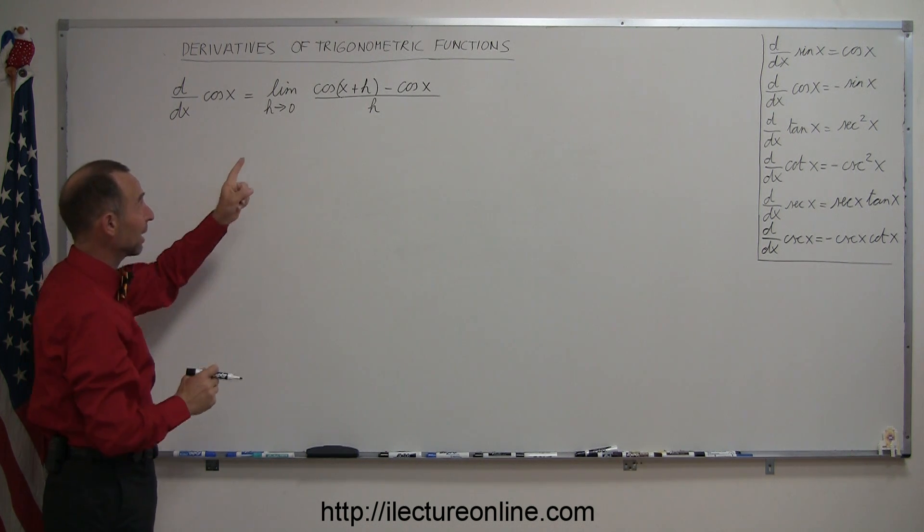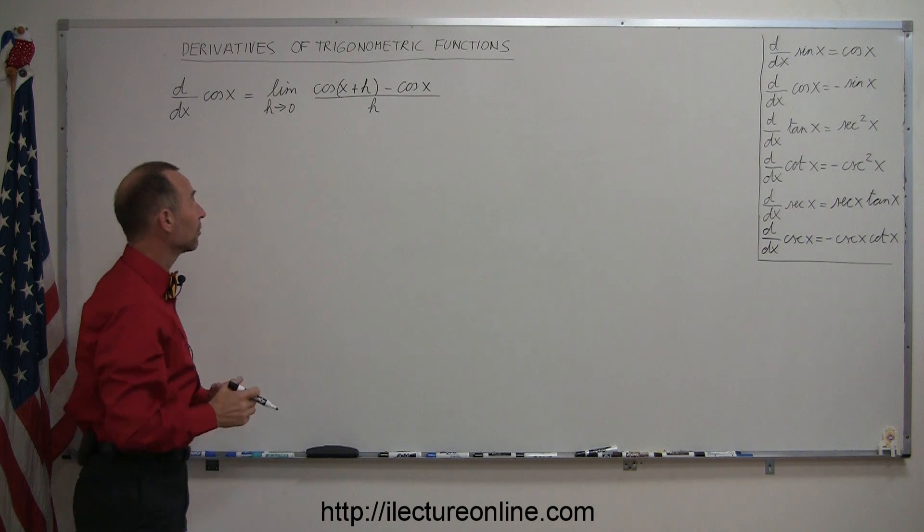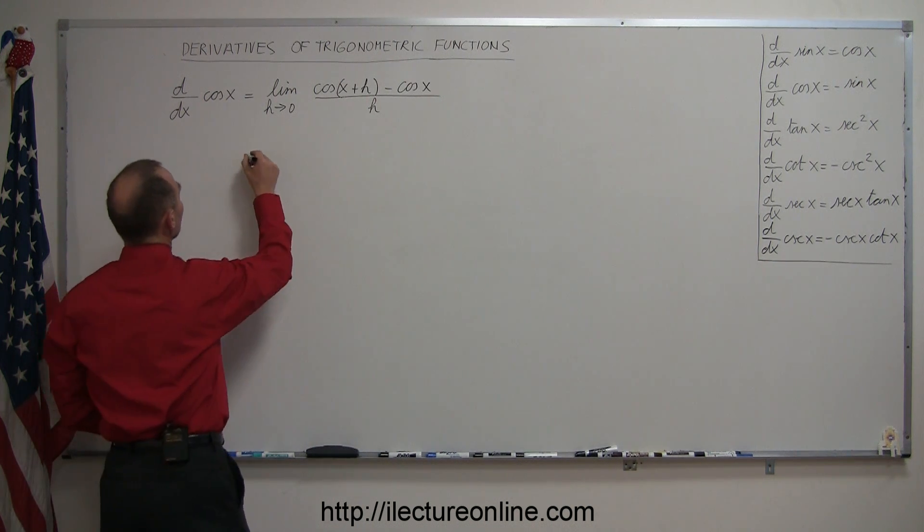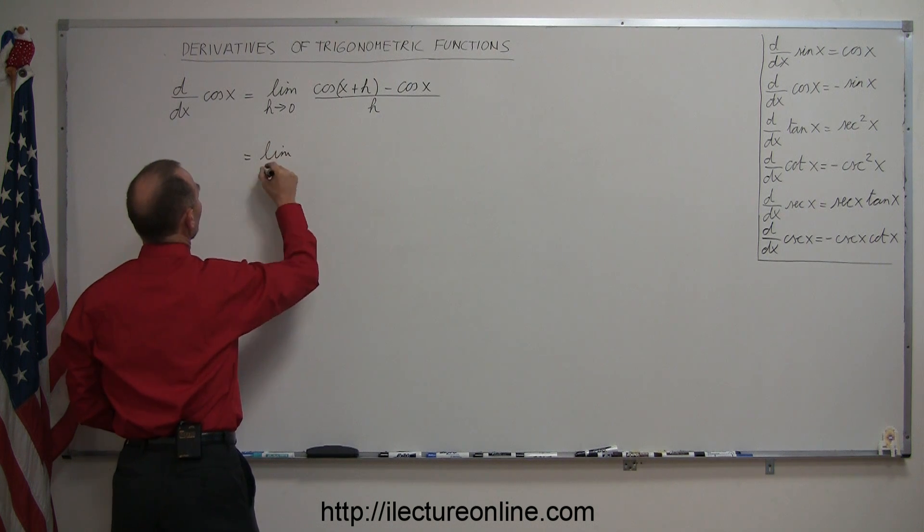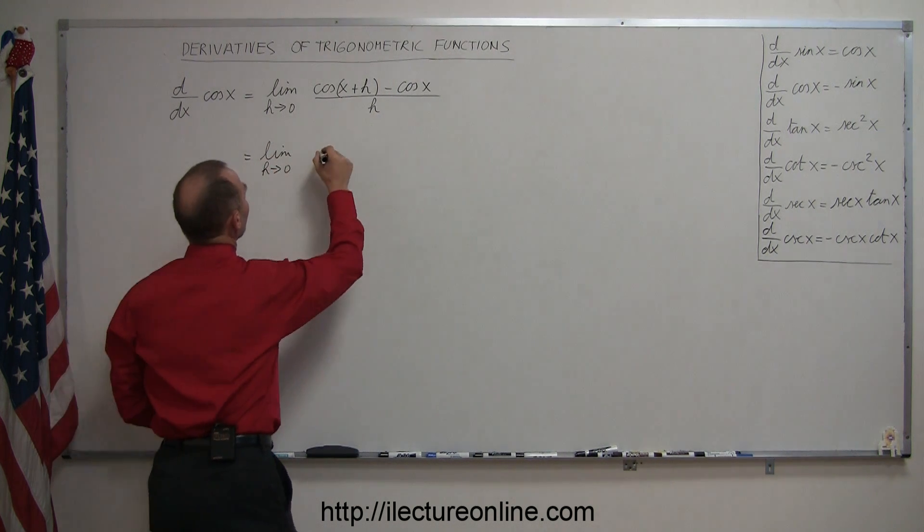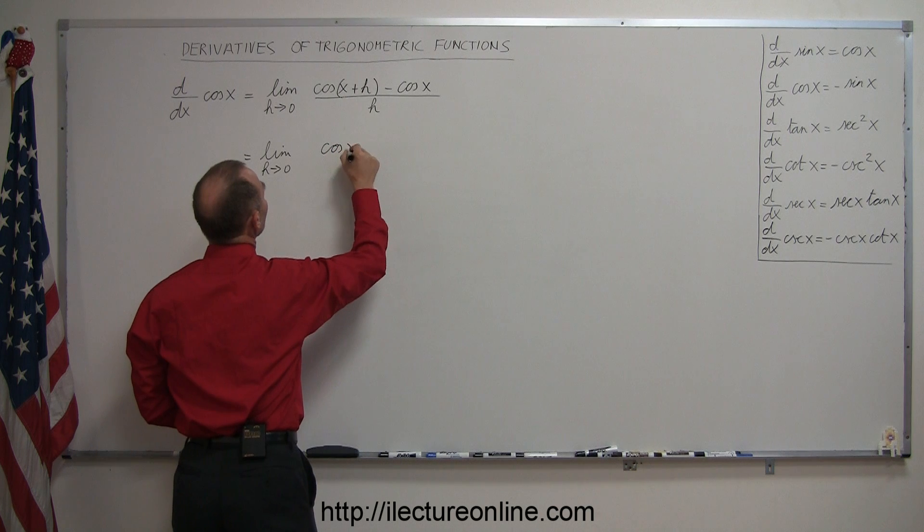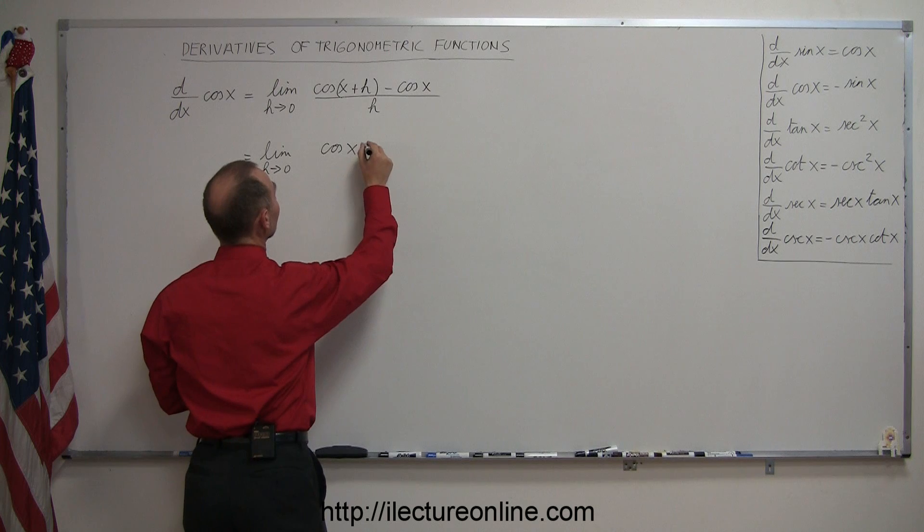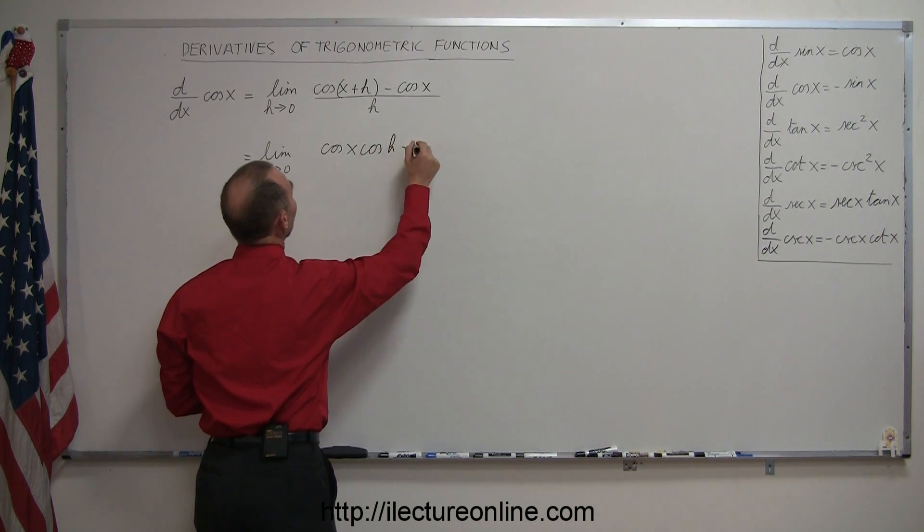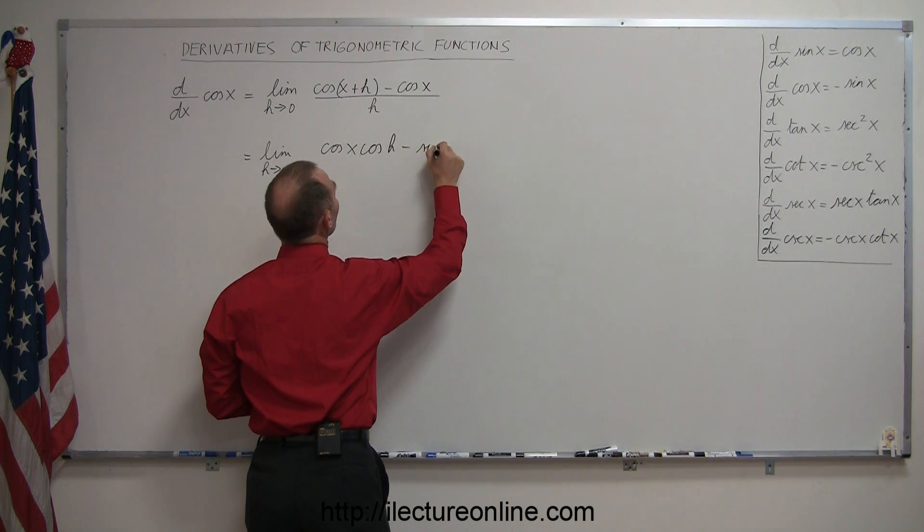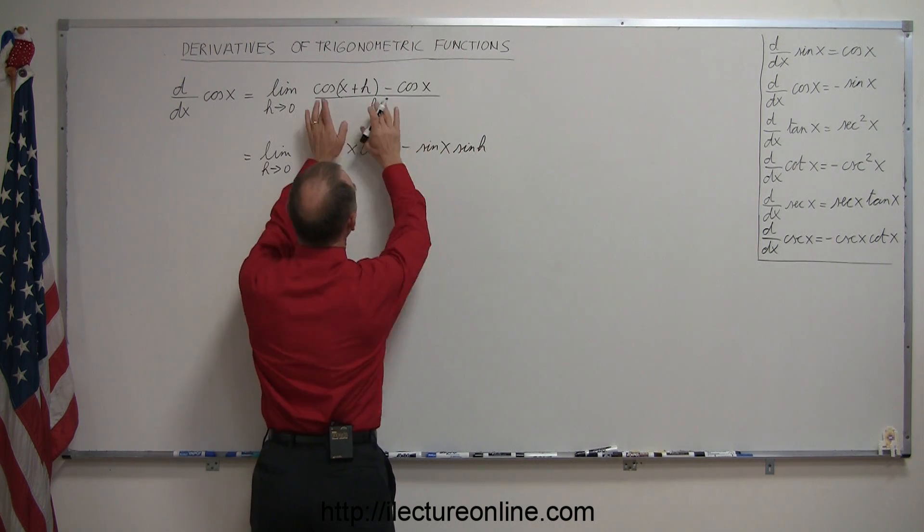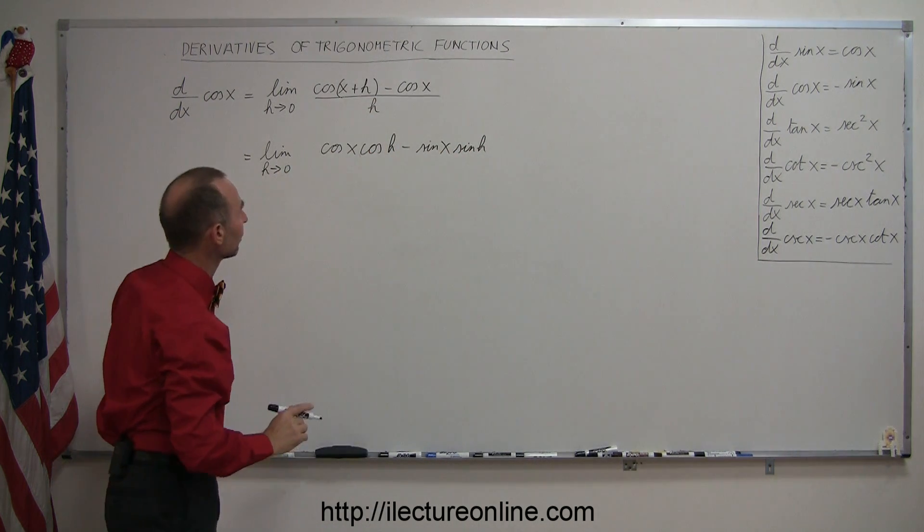Here we have to use the trigonometric identity of the sum of two angles for the cosine, which can be written as the limit as h goes to zero of the cosine of x times the cosine of h minus the sine of x times the sine of h. So that's the trigonometric identity that's equal to the cosine of the sum of two angles.